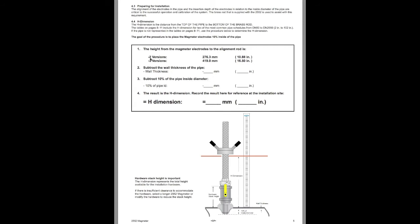You will be measuring from the bottom of the brass rod to the top of the pipe. You'll see here versions two and version three. This is the last digit on the part number for your 2552. So if you have a version two, you're going to start off with 10.88 inches. You're then going to subtract the wall thickness of your pipe, and then 10 percent of the total diameter of the pipe.